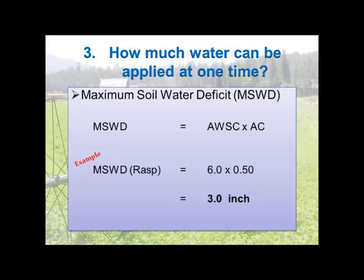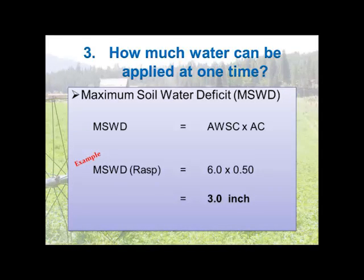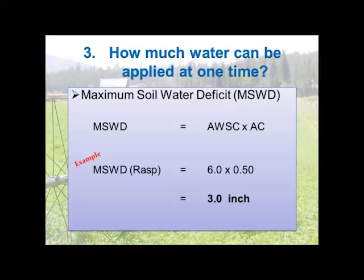For the raspberry crop we said it was six inches — we can only take out half, so that's three inches. If you've let the soil dry down to that three-inch mark, you do not want to apply more than three inches of water back with your irrigation system, because if you do you're just leaching out your nutrients, going to groundwater, and wasting water. For a grass crop, we can only put on about an inch of water.